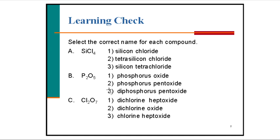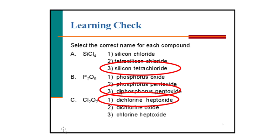Now I'm going to ask you to work on some examples to see if you can get the correct answers. You may pause the video and check the answers after. For SiCl4 — silicon is a metalloid and chlorine is a non-metal. One silicon (no mono for first non-metal) and four chlorine atoms, adding -IDE to chlorine gives chloride. The correct answer is silicon tetrachloride.